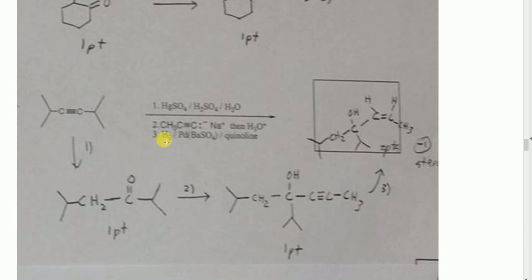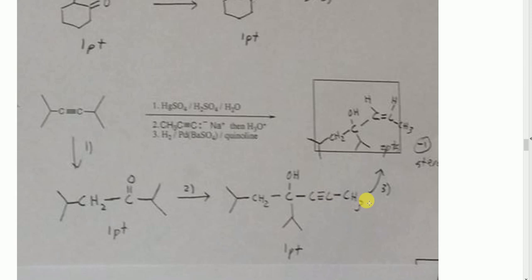NaOCl (bleach) only oxidizes secondary alcohols to carbonyls. With one primary and one secondary alcohol present, only the secondary alcohol is oxidized to a ketone; the primary is left alone. Next: HgSO4, H2SO4, H2O — this converts a triple bond to a ketone (Markovnikov hydration). Since the molecule is symmetric, both possible products are identical.